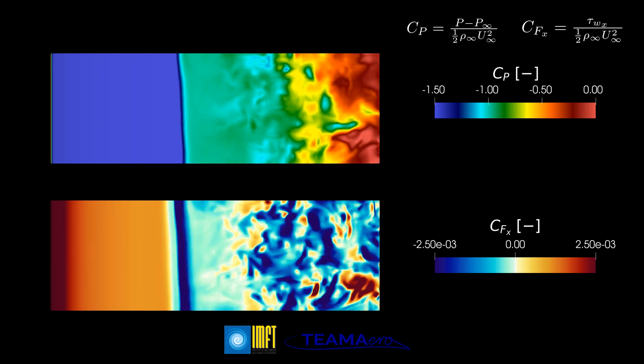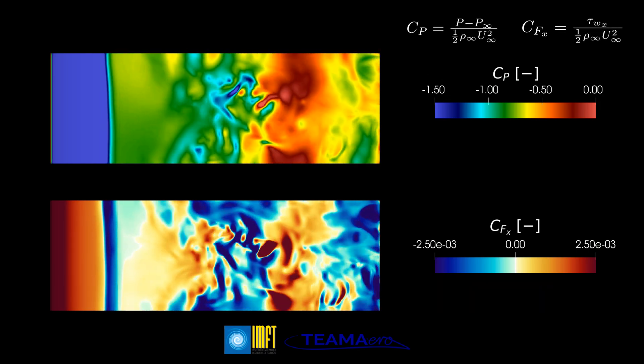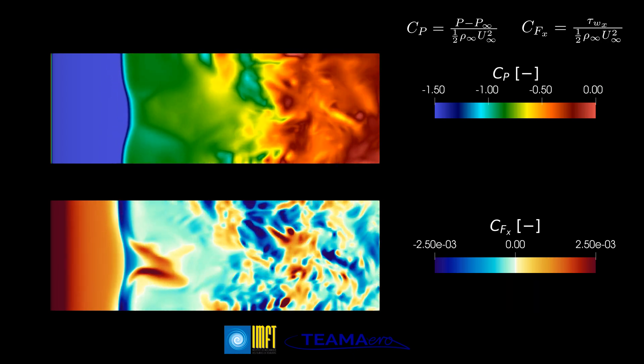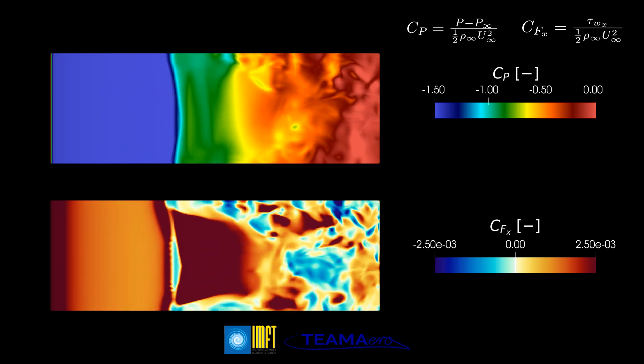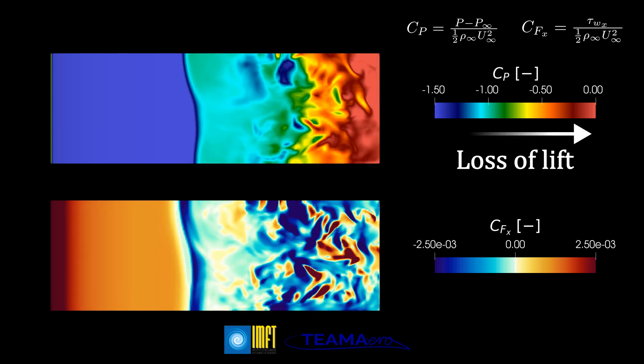Now, let's see in more detail what happens at the airfoil surface. On the top contour, we can see the time evolution of the pressure coefficient over the top side of the wing, and on the bottom contour, we visualize the values of the skin friction coefficient in the chordwise direction.